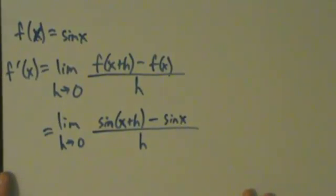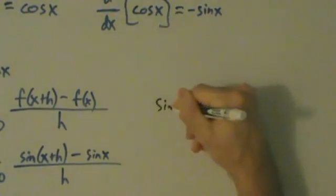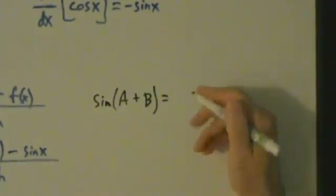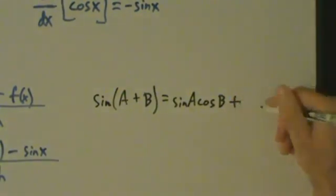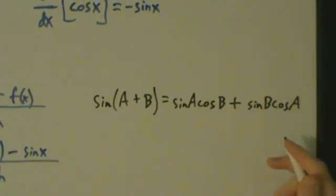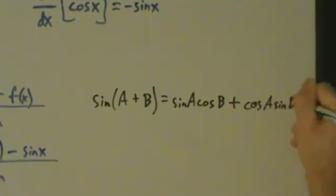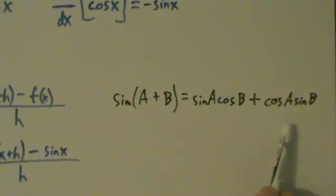Now we have to use one of our trig identities. Remember this one: sine of a plus b equals sine a cosine b plus cosine a sine b. That's one of our trig identities.